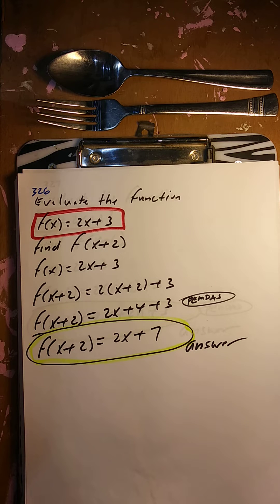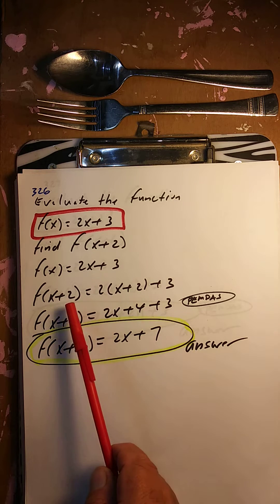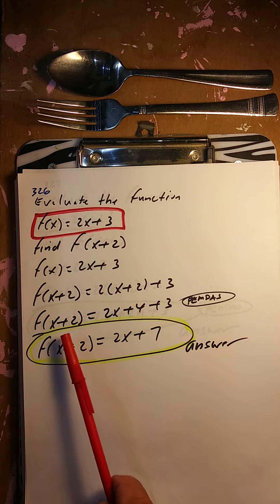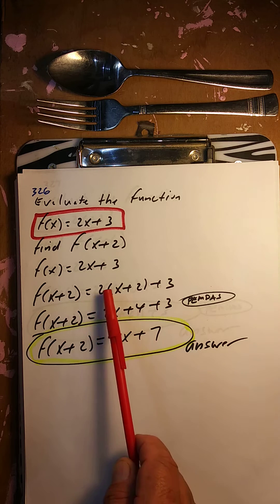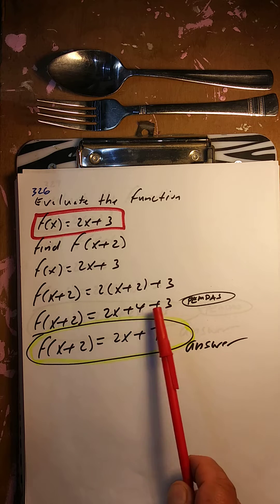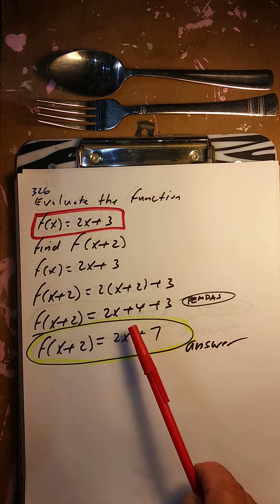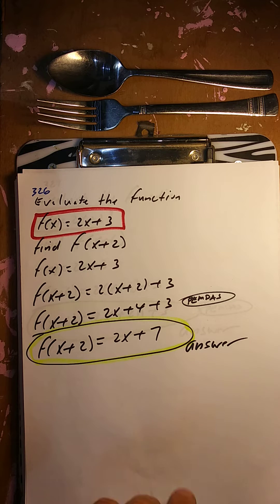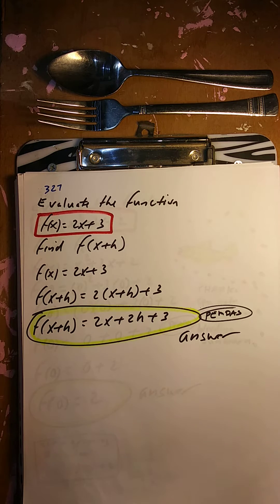Evaluate the function f of x equals 2x plus 3, find f of x plus 2. For the x we're going to put x plus 2. So 2 times x is 2x, 2 times 2 is 4. We can put these together: 2x plus 7. So f of x plus 2 equals 2x plus 7.